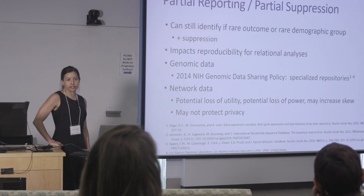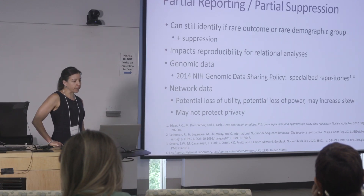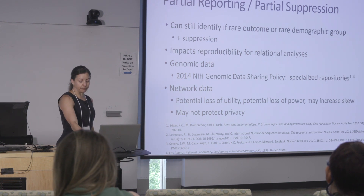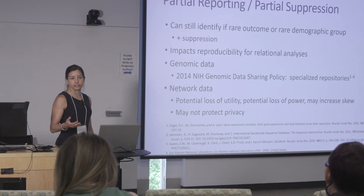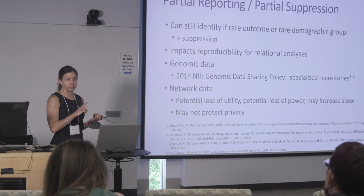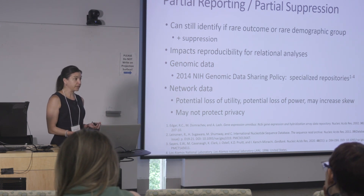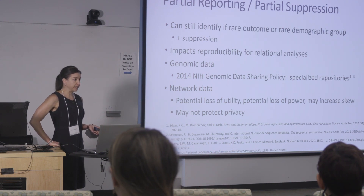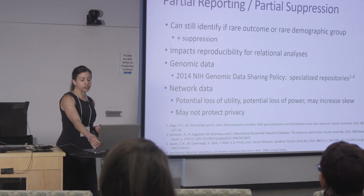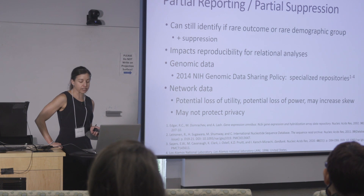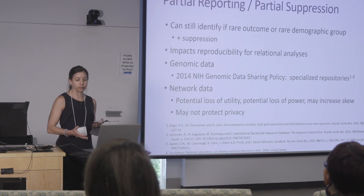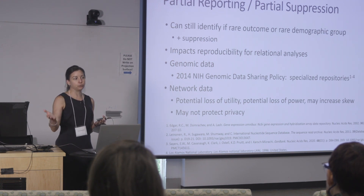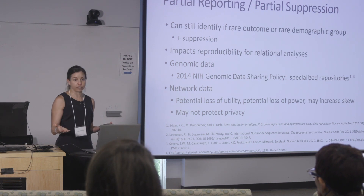Partial reporting is when only a small percentage or some proportion of the data are shared. In the case of a rare outcome or rare trait, you might still be able to re-identify someone. For example, we suppress ethnic and racial categories in eastern North Carolina when looking at HIV data — using non-Hispanic white, non-Hispanic Black, Hispanic Latinx, and other — because we have such a low proportion of other ethnicities and races. It does impact reproducibility of some relational analyses, but it's commonly used for genomic data because genetic data have a lot of utility on their own. When putting HIV sequences up in a repository, we won't put our entire cohort there — you'd still have the value of the sequence, but you wouldn't be able to link all those people together and re-identify them.